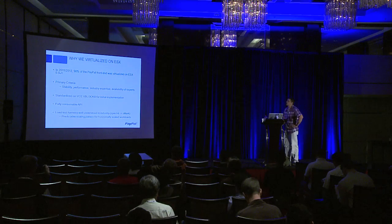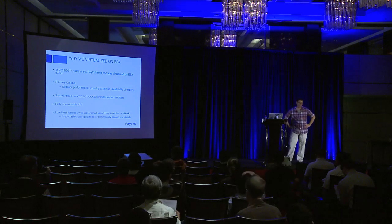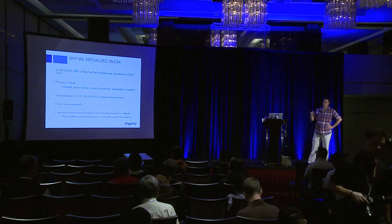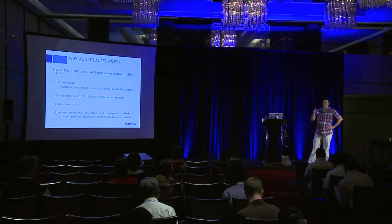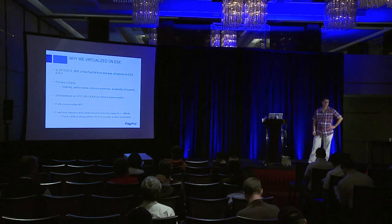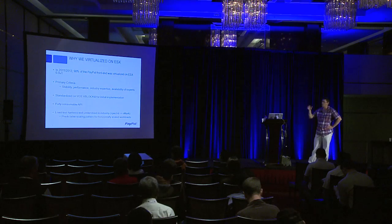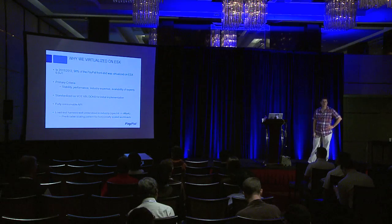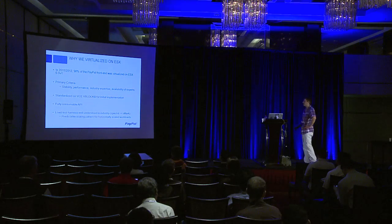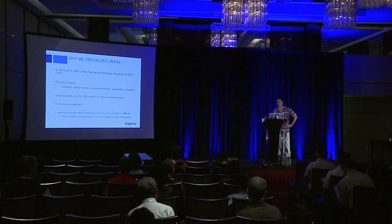When we went with VCE and the V-block, we needed a solution we could measure and monitor based on how we scaled our workload. PayPal has a very defined C++ compiled workload that scales horizontally as traffic volume goes up. It maps almost exactly to SPECint. If you take a processor's SPECint and divide by our capacity formula, we can buy hardware based on SPECint. You can translate that to a V-mark under VMware and scale four-core VMs until you run out of infrastructure.